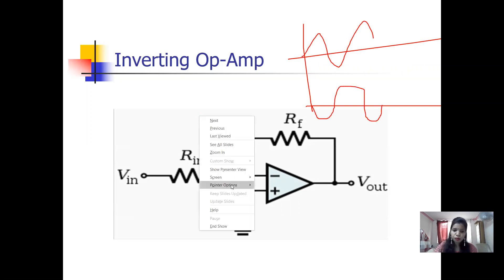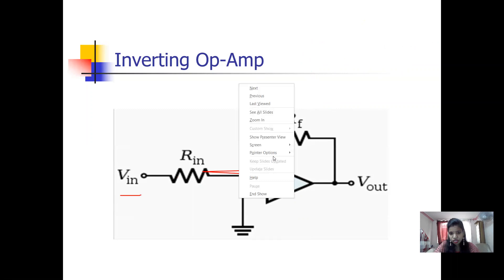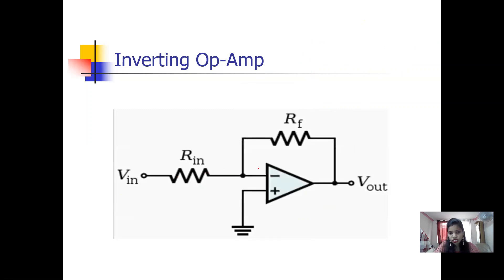In the inverting op-amp, the input is applied at the inverting terminal, which is the negative terminal. For the non-inverting op-amp, the input will be applied at the positive terminal.